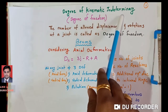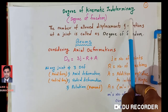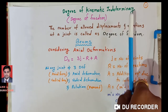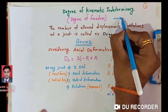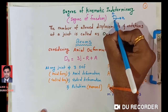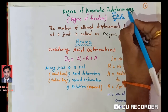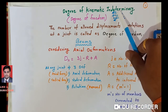Basically, degree of kinematic indeterminacy is related to slopes, deflections, and deformations. At any joint, there are 3 degrees of freedom, also called degrees of freedom. Those three are: rotation (theta), displacement in the x-direction (delta x), and displacement in the y-direction (delta y).